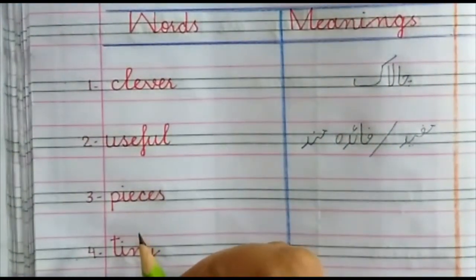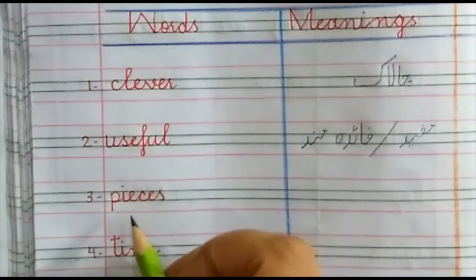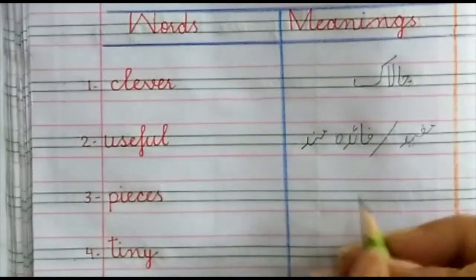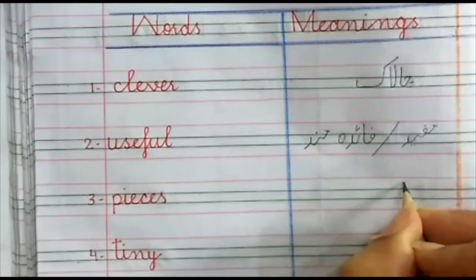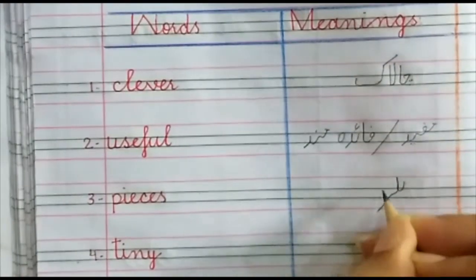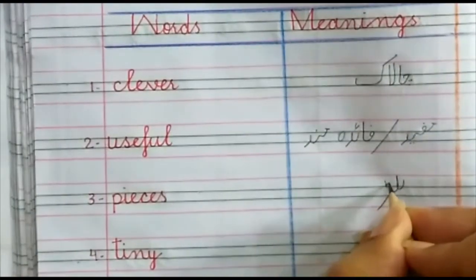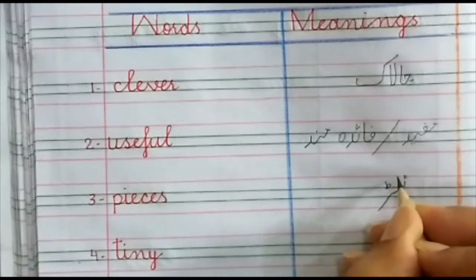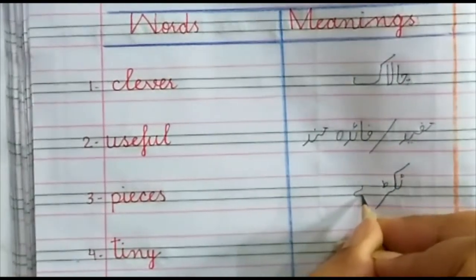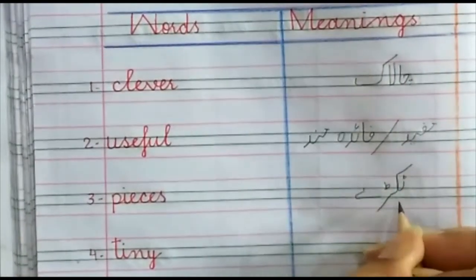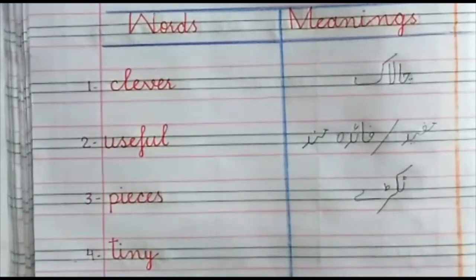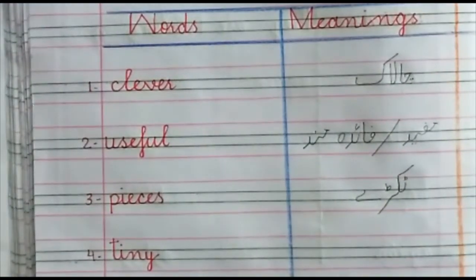Next word is pieces. Pieces mean tukde. Go to the next word.